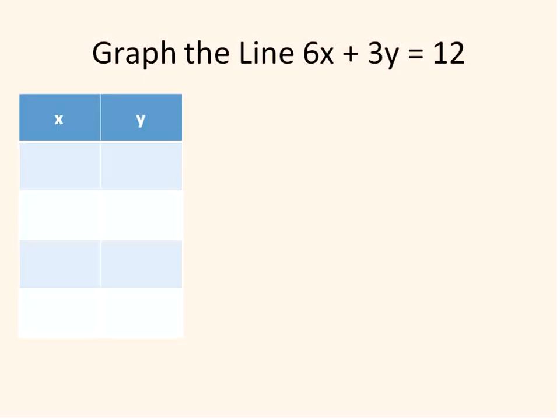A table of values has a column for x values and a column for y values. The x values, you can put anything you want in there. You need to have at least three points to make sure you've got a straight line, but you can have as many as you want. The more points you have, the more sure you are that you've done your work correctly.